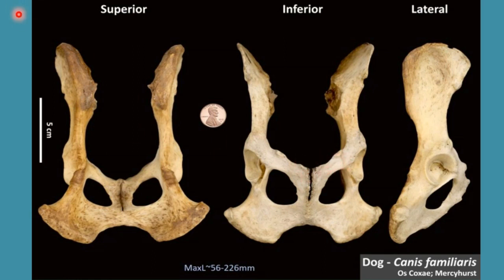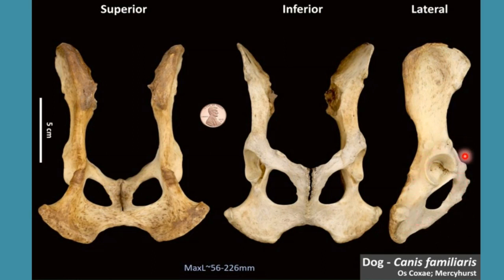Now let's talk about the acetabulum, which is a cavity that receives the head of the femur in order to form the hip joint. The ilium, ischium, and pubis combinedly form the acetabulum. In the case of young dogs, this acetabulum also contains an acetabular bone, which is absent in the case of adult dogs.